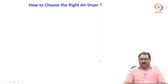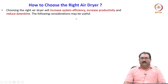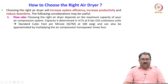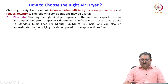Choosing the right air dryer depends on the maximum capacity of your air compression system. Capacity is measured in m³ per second at 6 bar, or in US customary units as standard cubic feet per minute (scfm) at 100 psig, and can also be approximated by multiplying the air compression horsepower by 4. The right air dryer will increase system efficiency, increase productivity, and reduce downtime.